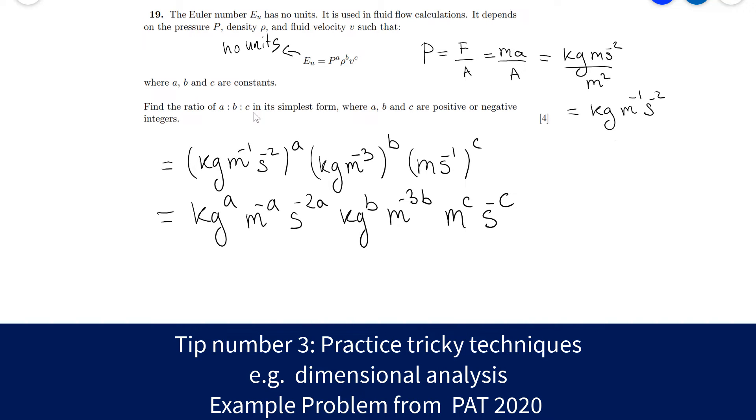Now what we can do is group all of the like quantities. And for instance, kilograms to the power of A multiplied by kg to the power of B. Well, this will simply give us kilograms to the power of A plus B. Now let's see, we have meters here, meters here and meters here. So this will be equal to m to the power of minus A minus 3B plus C. And finally, we have the seconds, so that will be s to the power of minus 2A minus C.